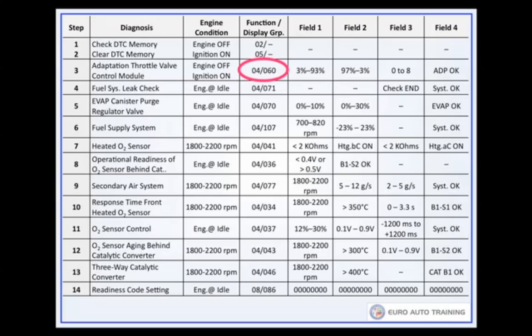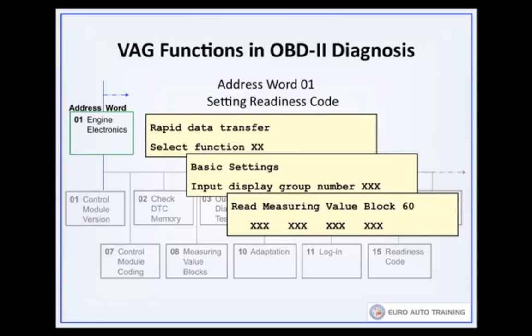As an example, let's look at step 3 in our typical readiness code chart. We have verified that DTC memory is clear. The next test looks at the basic settings function 04 and display group 60. As prompted, we select function 04, basic settings, and then enter 0, 6, 0 to select display group 60. Once done, we see the four display fields of repair group 60.